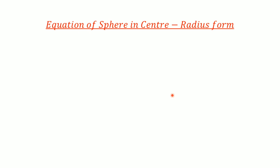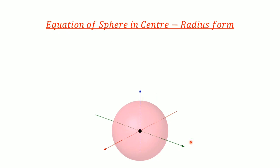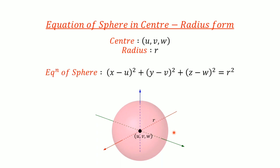First, by using center-radius form. In center-radius form, suppose this is our sphere with center (u, v, w) and radius r. If the coordinates of the center and radius are given, then the equation of the sphere is: (x − u)² + (y − v)² + (z − w)² = r². This is the equation of a sphere in center-radius form.